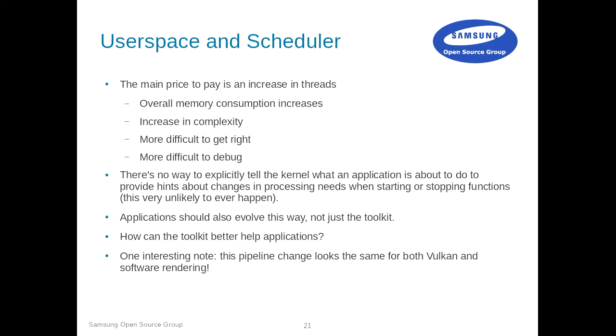There is also no way to be explicit to the kernel. As a developer, I know what my application is going to do when I enter a function — I know exactly what kind of workload it will be. I could tell the kernel via some hint that this is supposed to be rendering, or drawing, or scene graph work. But kernels have a huge constraint of API and ABI stability for decades, so they are very resistant to new APIs. We better forget about passing hints via a new API and just work around it.